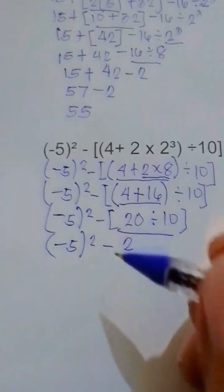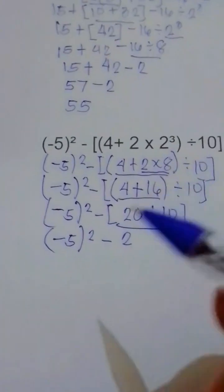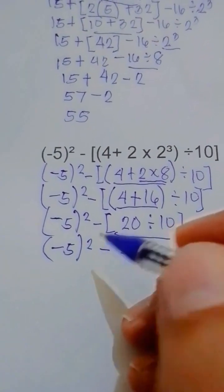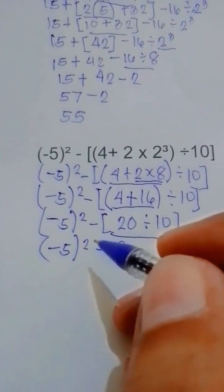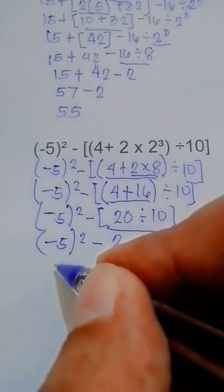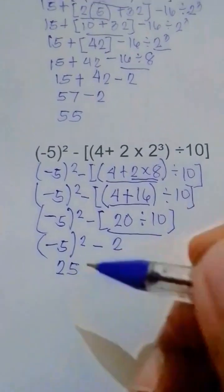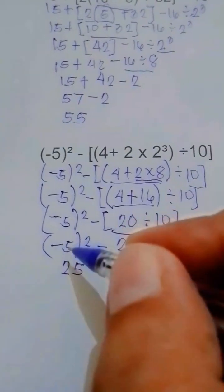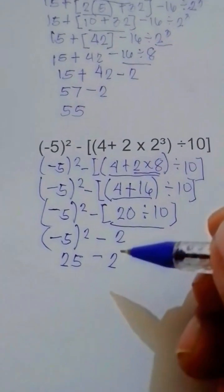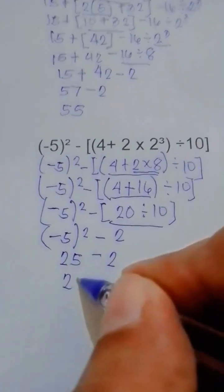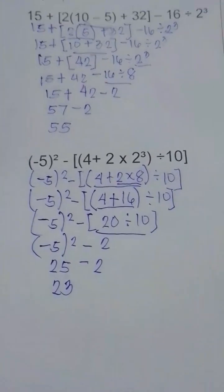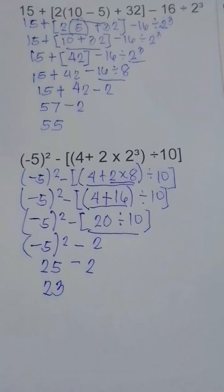Next one is the exponent. Negative 5 raised to the second power means negative 5 multiplied by itself, so the answer is positive 25. Negative times negative equals positive. So negative 5 to the second power, 25 minus 2. So the answer is 23. 25 minus 2 equals 23.